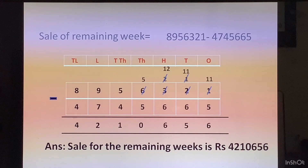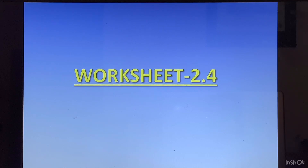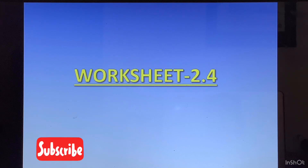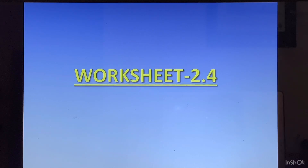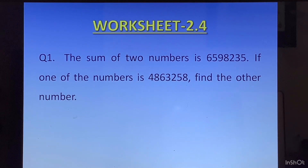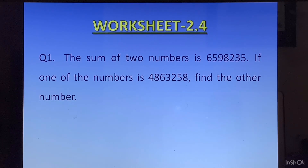Now let us do a worksheet to enhance your understanding — Worksheet 2.4. The solutions to this worksheet will be uploaded on the channel. Those of you who have not yet subscribed, please subscribe and hit the bell icon so that you get notified when I upload the solutions. Question 1: The sum of two numbers is 6,598,235. If one of the numbers is 4,863,258, find the other number. They have given us the sum of two numbers and one of the numbers — we have to find the other number.